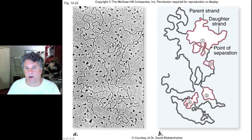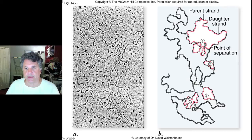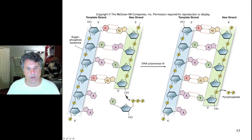We finished the last part of this lecture talking about the replication forks that emanate from origins of replication on chromosomes. And now it's time to address what types of chemical reactions are occurring at the replication fork in the synthesis of new DNA strands upon template strands of the original double helical molecule.